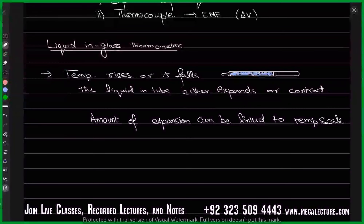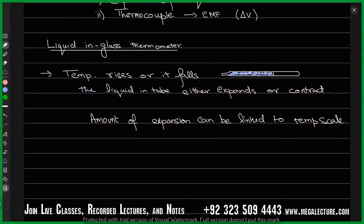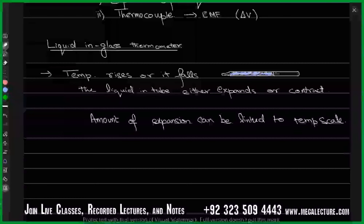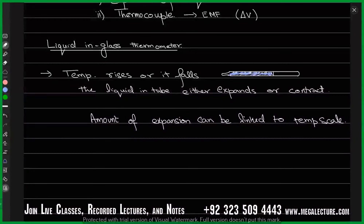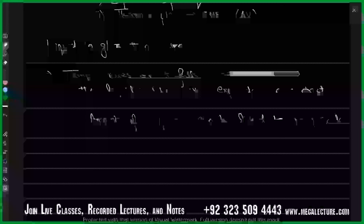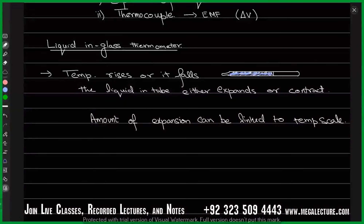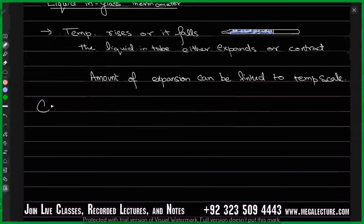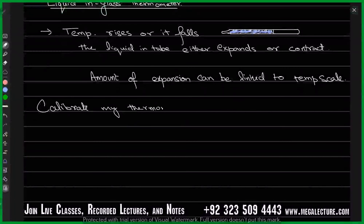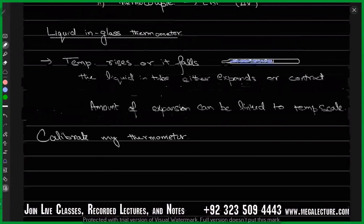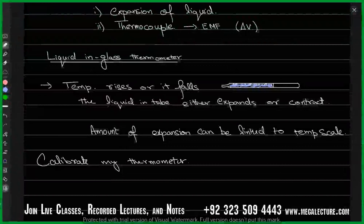Now let's try to calibrate our thermometer. We need to tell our thermometer what is the maximum limit and the minimum limit that it can measure. All other temperatures will lie in between those two limits. When we define these limits, we say that we are calibrating our thermometer. Is it clear so far - how we'll use the physical properties of these liquids to measure temperature? It's because of the expansion and contraction of the liquid.